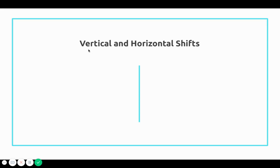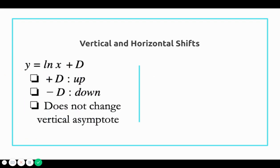We're going to talk about a few different types of transformations. We can move these graphs vertically or horizontally — shifting them up and down or side to side without changing their shape. If you have y equals natural log of x plus d, a plus d at the end moves the function up; a minus d moves it down. Either way, it does not change the vertical asymptote.